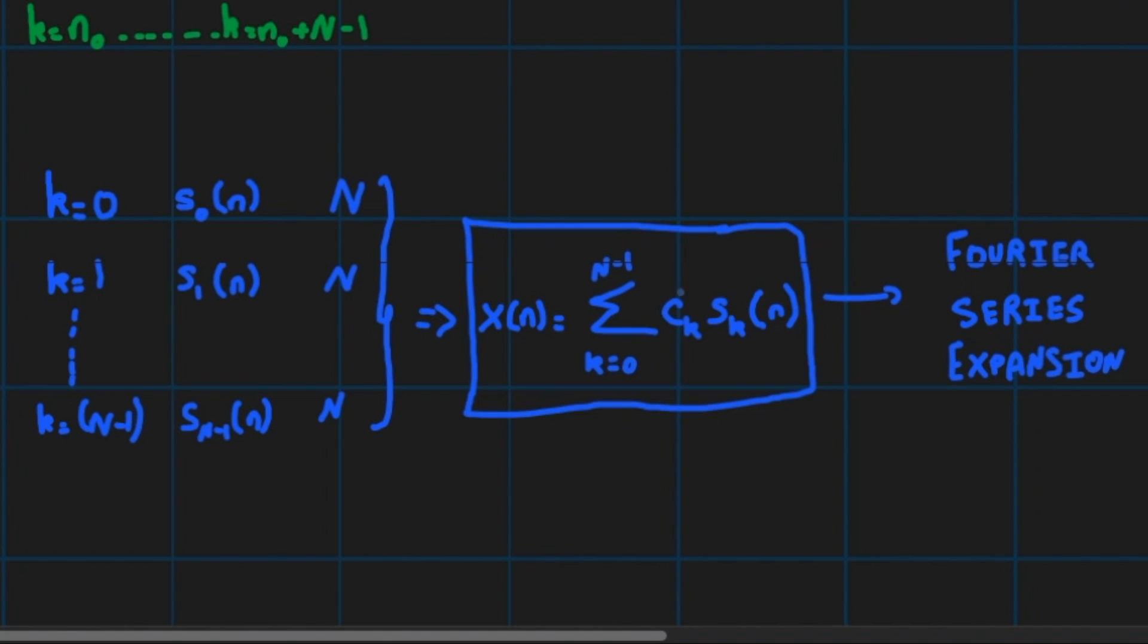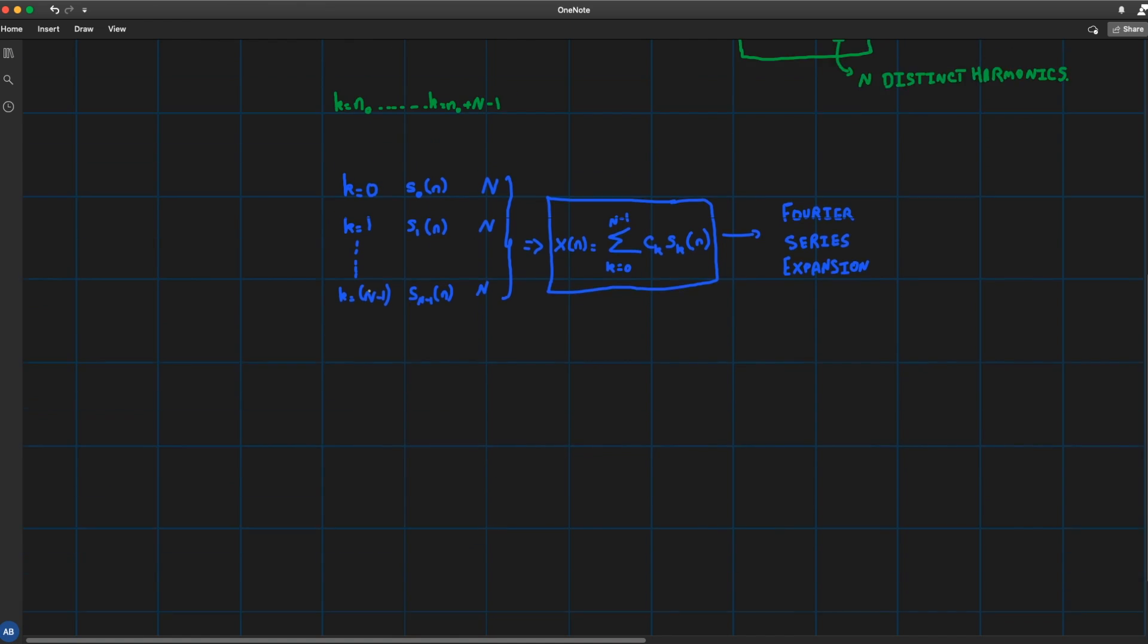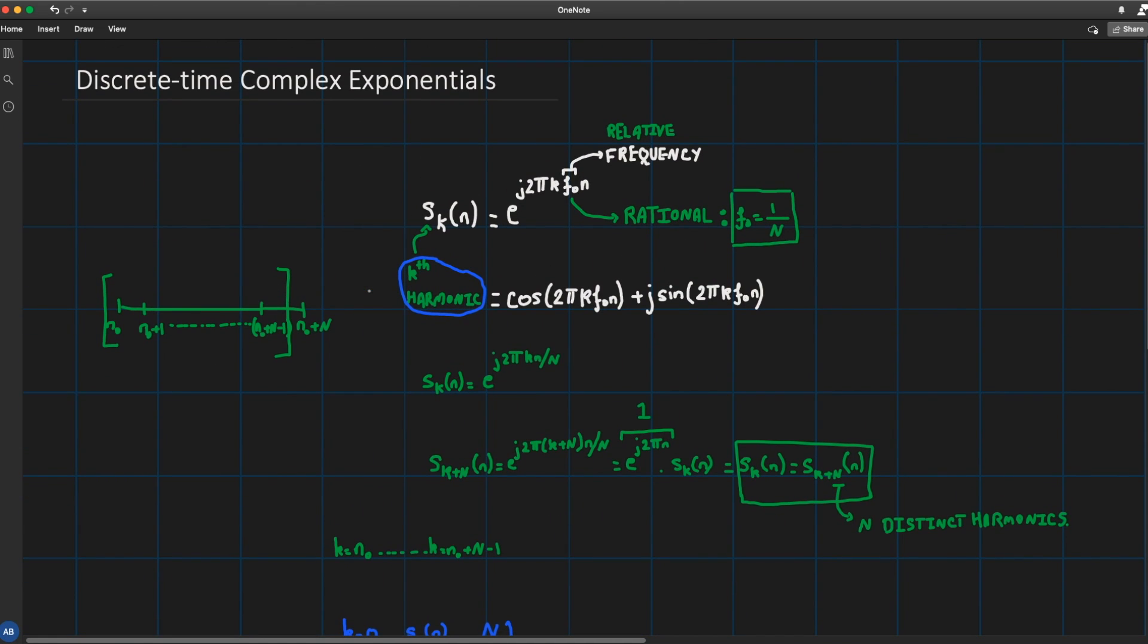Just bear in mind that s_k(n) is referred to as the k-th harmonic of the signal x(n) and actually of any periodic signal x(n). Now there's something really interesting about this discrete time harmonic. We can actually instead of generating our k-th harmonic using direct computation,